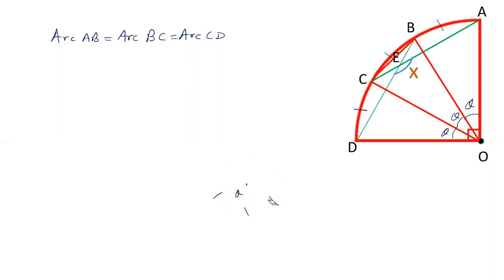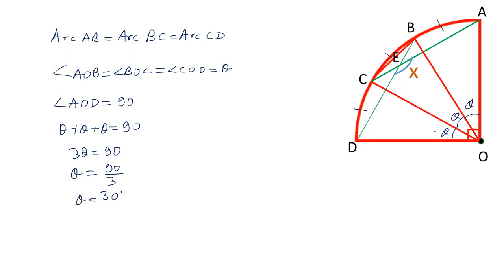All three angles theta will be equal. So angle AOB equals angle BOC equals angle COD equals theta. And we already know that angle AOD is 90 degrees, which equals theta plus theta plus theta. That is, 3 theta equals 90 degrees. The value of angle theta is 90 by 3, that is 30 degrees. So each of these angles is 30 degrees.